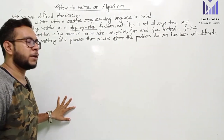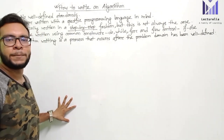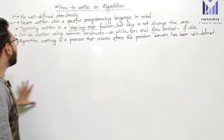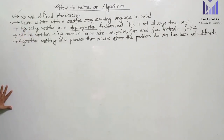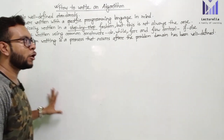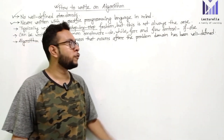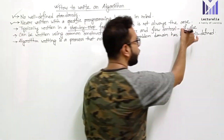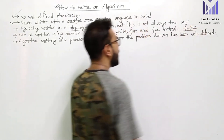It is a step-by-step procedure for solving any problem, but not always the case — we don't always write it strictly step-by-step. The next point is that it can be written using common constructs like do-while, for, do-while. We can use flow control such as if statements.